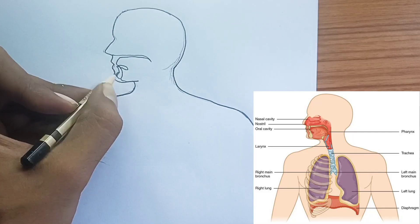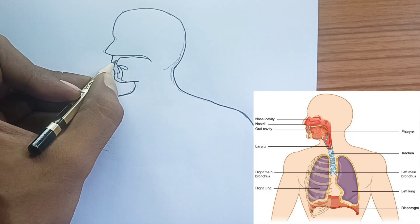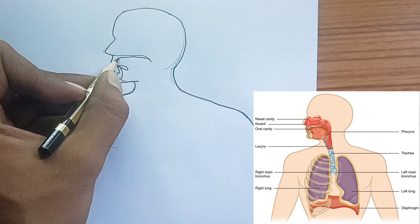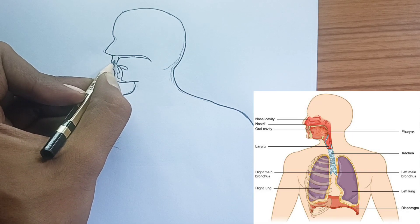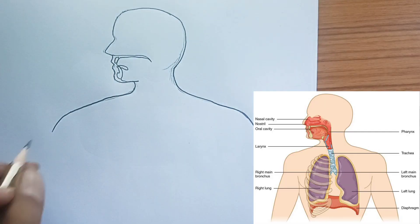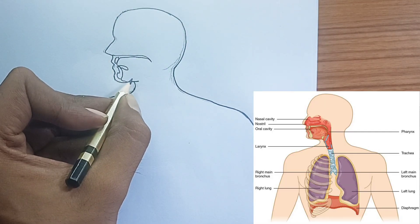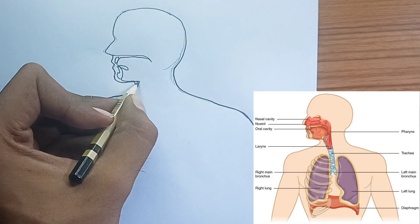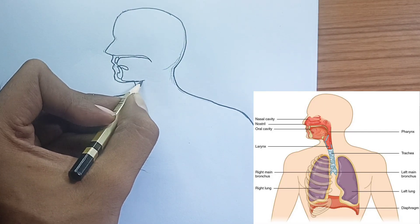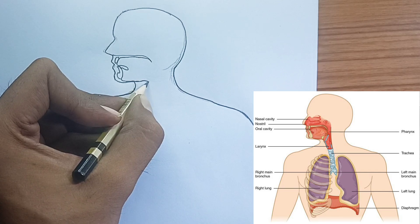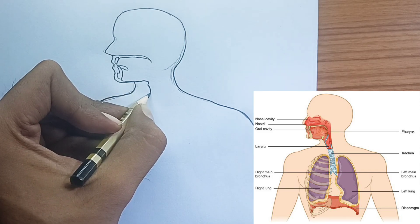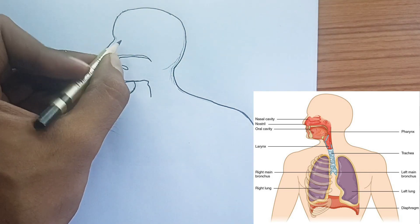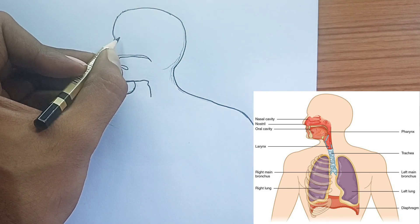Trachea — the windpipe. The trachea is a sturdy tube reinforced by rings of cartilage to keep it open. It's lined with cilia, tiny hair-like structures that sweep mucus and trapped particles upward and out of the respiratory system.